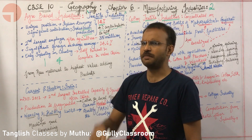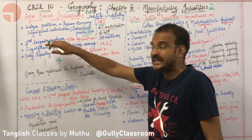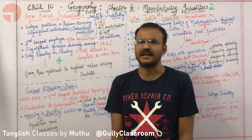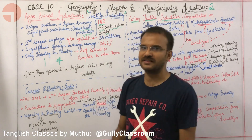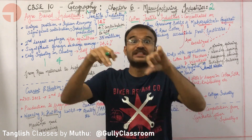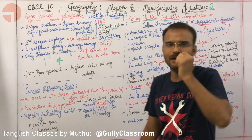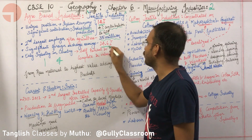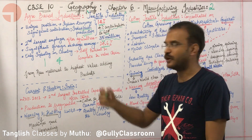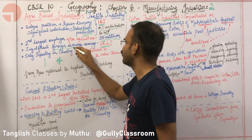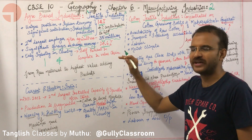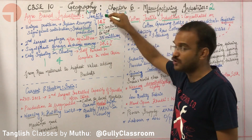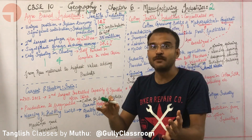Textile Industries contribute 4% to GDP. It is the 2nd largest employer after agriculture. 35 million people are employed in Textile Industries. Textile Industries account for 24.6% of foreign earnings.